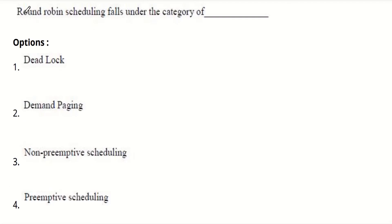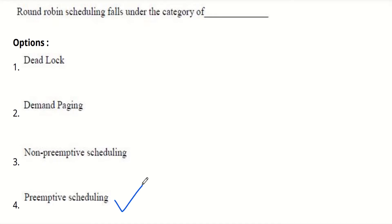The first question is: Round Robin scheduling falls under the category of — options are deadlock, demand paging, non-preemptive scheduling, and preemptive scheduling. In Round Robin, we give a fixed amount of time for every process to execute. If the process executes within the given time it's fine, but if not, the process is forcibly context-switched and added back into the queue. So Round Robin comes under preemptive scheduling, because preemptive scheduling means forcibly removing the process from the CPU.